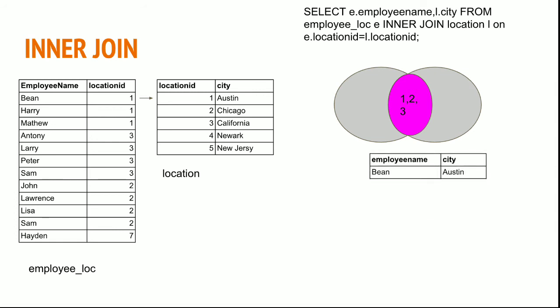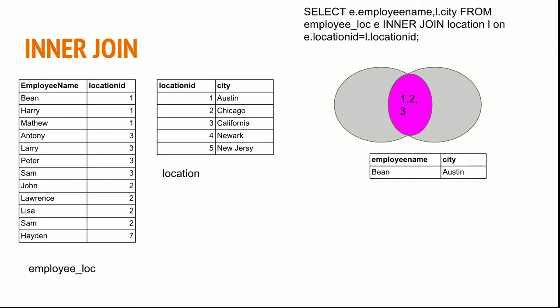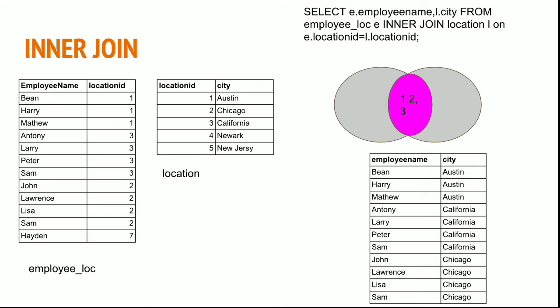The first record will check with the first record of the employee table, then looks for the second record, and then the third. Similarly, the first record of table 1 will check for records in table 2. Once all records are verified, it will go to the second record in table 1 and try to map with all records in table 2. In this fashion it checks all records, and once all iterations have happened it will return the result. You don't have location ID 7 here, and you don't have 4 and 5 — New York and New Jersey — here.